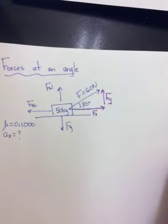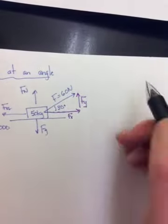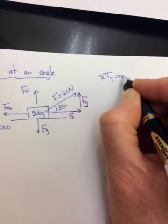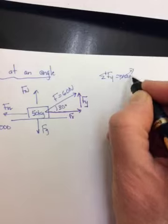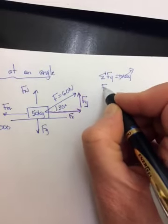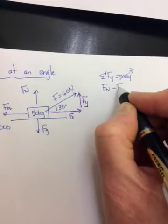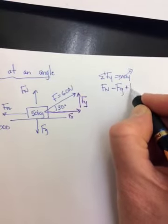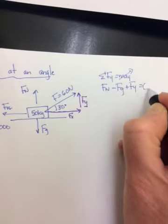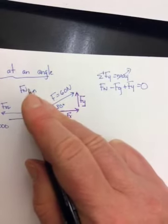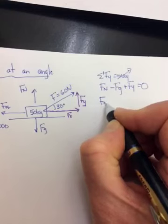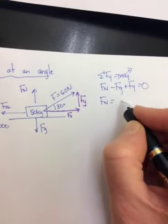Alright, so you still start in the same spot. You still start with some of the forces in the y. And this box is still not moving in the y. It's just that this time you have an fn going up. And an fg going down. And an fy going up. So it's going to be positive. Equals 0. You're still trying to solve for fn. So you're still going to get it by itself alone by taking the other two terms over.